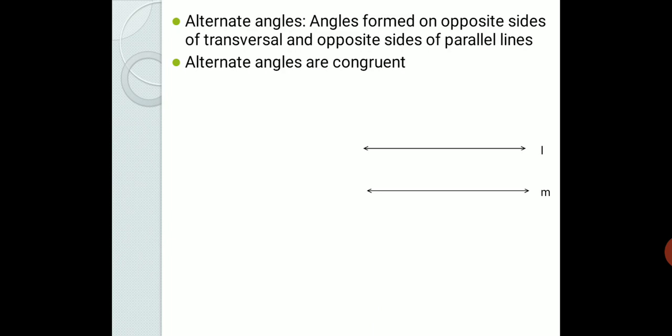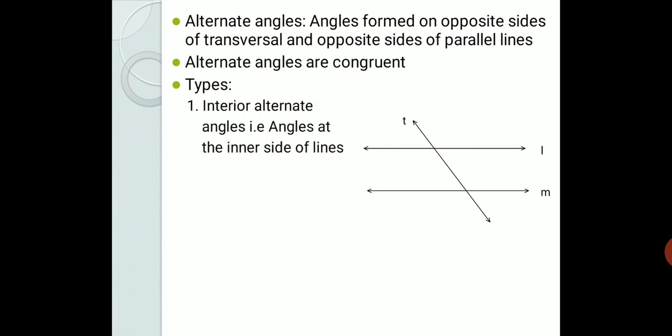Here, line L is parallel to line M and line T is the transversal. Let us first learn the types of alternate angles. The first type is interior alternate angles — angles at the inner side of the lines. The first pair is angle 4 and angle 6. Angle 4 is on the left-hand side of the transversal and angle 6 is on the right-hand side — they are alternate. Angle 4 is below line L and angle 6 is above line M, so both angles satisfy the definition. These two angles are alternate interior angles, which are congruent to each other.